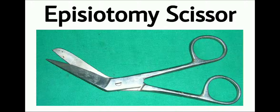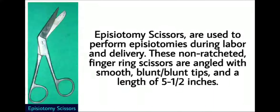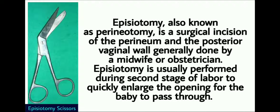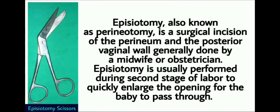This article is known as Episiotomy Scissor. Episiotomy scissors are used to perform episiotomies during labor and delivery. These non-ratcheted finger ring scissors are angled with smooth blunt tips and a length of 5.5 inches. Episiotomy, also known as Perineotomy, is a surgical incision of the perineum and the posterior vaginal wall, generally done by a midwife or obstetrician. It is usually performed during the second stage of labor to quickly enlarge the opening for the baby to pass through.